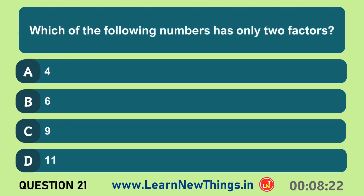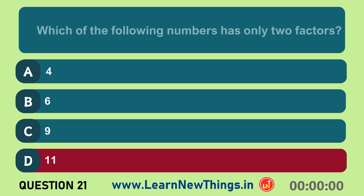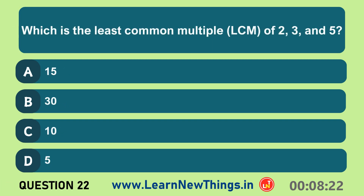Which of the following numbers has only 2 factors? 11. Which is the least common multiple of 2, 3, and 5? 30.